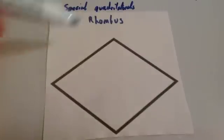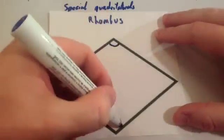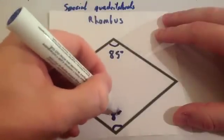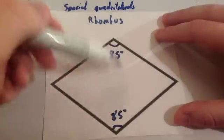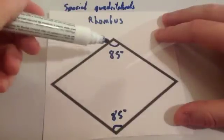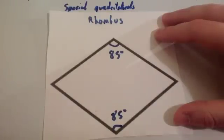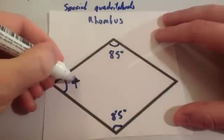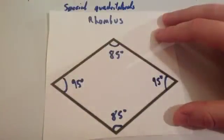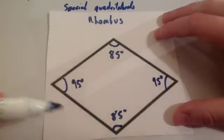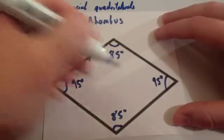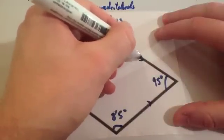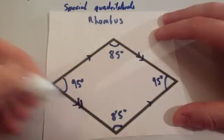Finally, a rhombus has all four sides the same length and two pairs of equal angles — opposite angles are equal. For instance, if one angle is 85 degrees, the opposite angle is also 85 degrees. You can work out the other two: 85 + 85 = 170, then 360 − 170 = 190, and half of that is 95 degrees each. So if you're given one angle in a rhombus, you can work out all four. Like a parallelogram, the opposite angles are equal because there are two pairs of parallel lines.